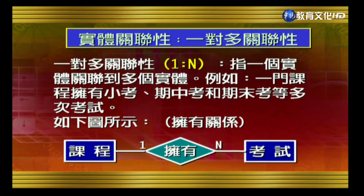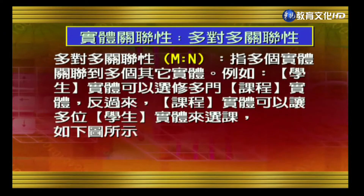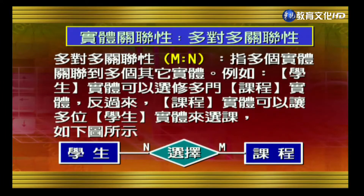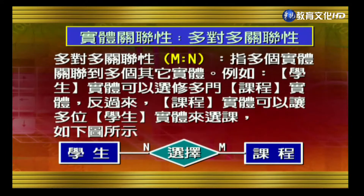Many-to-many (M:N) relationships mean multiple entities are associated with multiple other entities. For example, in the enrollment relationship, a student can enroll in multiple courses, and a course can also be selected by multiple students — so this is many-to-many. These relationship notations, including the N and M cardinality markers on the diamond symbols, are crow's foot notation that was introduced in detail in the earlier object-oriented courses.